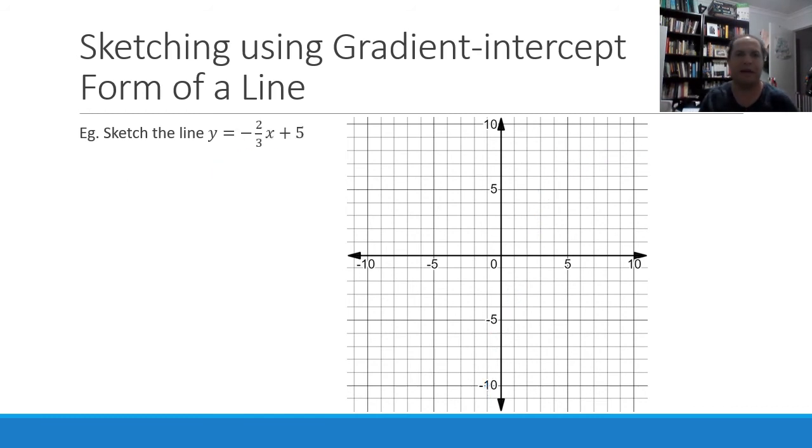All right. Now this one here, same idea. Our y-intercept, our c value, is positive 5 this time. So we'll put a cross there. That's our first point.